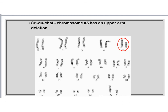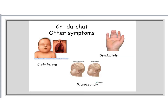We also have cri du chat, or cry of the cat syndrome. This is when chromosome number 5 has an upper arm deletion. If you look at chromosome number 5, you can see that the chromosome on the right is shorter than the one on the left. Cry of the cat has several different symptoms. Typically a baby born with this syndrome has a cleft palate — the soft part on the roof of the mouth is not fully formed. You also have syndactyly, where fingers may be webbed or fused. And then microcephaly, where the brain area does not develop properly and doesn't have proper space to fully develop. The reason it's called cry of the cat is because when a baby with this syndrome cries, it actually sounds like a cat crying.